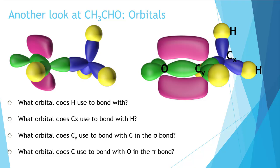What orbital does H use to bond with? This could be true of all of the H's that we have, so we only really need to do it for one, but it would be true of any of the H's that we look at. All it has available to it to bond with is an s orbital.